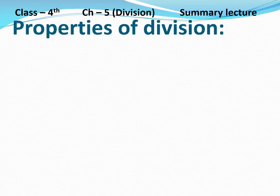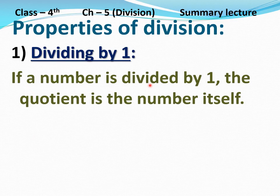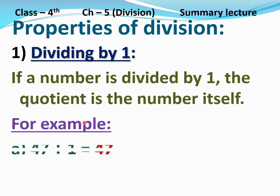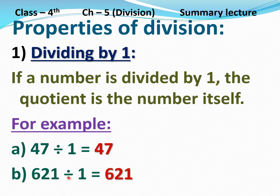Now properties of division. Property number 1: Dividing by 1. If a number is divided by 1, the quotient is the number itself. For example, part A: 47 divided by 1 equals 47. See, if we divide 47 by 1, the quotient is the number itself, that is 47. Part B: 621 divided by 1 equals 621.